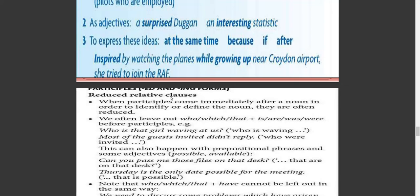Reduced relative clauses: when participles come immediately after a noun in order to identify or define it, they are often reduced. We often leave out 'who,' 'which,' 'that,' plus 'is' or 'are' before the participle. For example: 'Who is that waving at us?' — omitting 'who is.' 'Most of the guests invited didn't reply' — omitting 'who were.' This can also happen with a prepositional phrase.